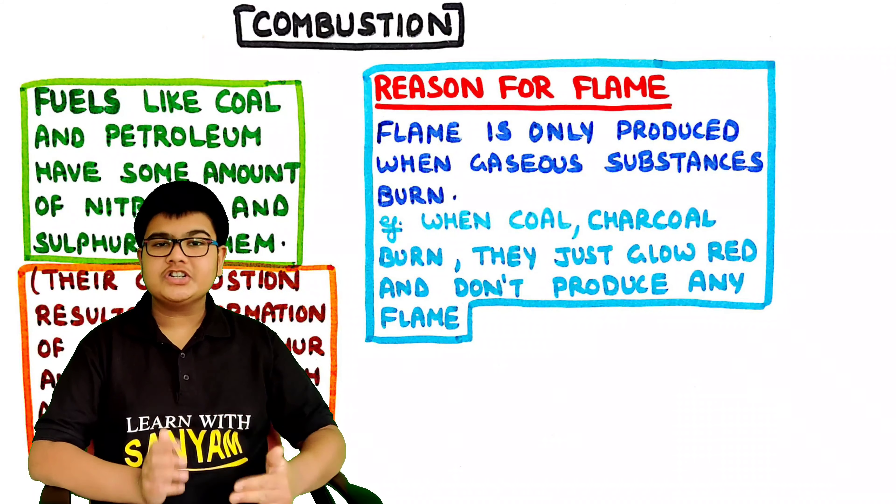Fuels like coal and petroleum contain some amount of nitrogen and sulfur. When we burn these fuels, it results in the formation of oxides of sulfur and nitrogen, which are very harmful air pollutants and also lead to acid rain. Thus we should avoid using fuels like coal and petroleum and instead shift to cleaner fuels.